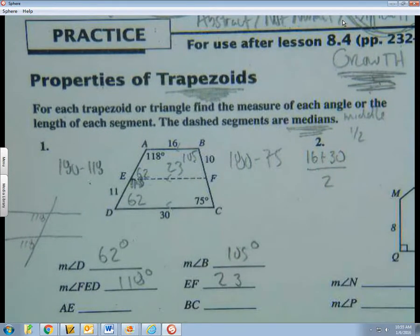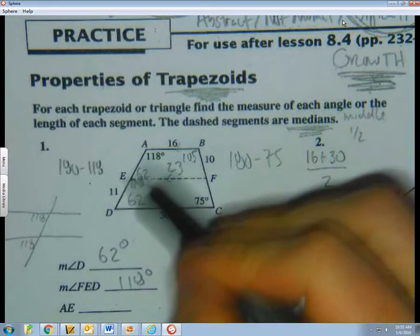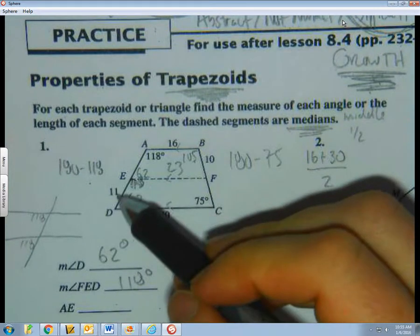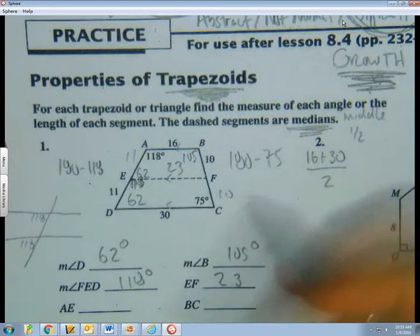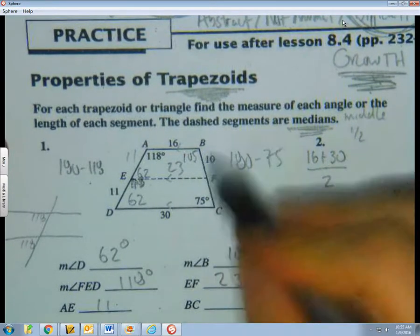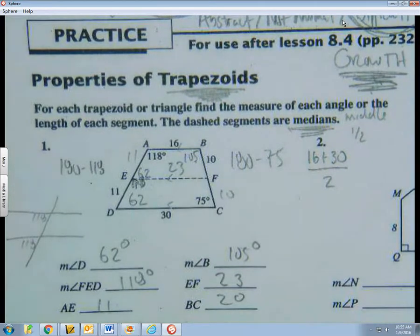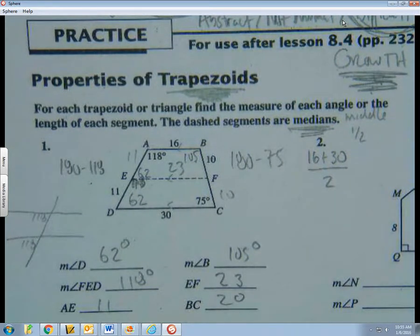Now it's just a matter of filling things in. D is 62. B is 105. FED is 118, these are degrees. AE is right here. If this is a median, well then this is 11, this is 11, this is 10, this is 10. So AE is 11, and then BC is the whole thing, 20. I'll give you a second to get that down. We can ask the person who's driving the bus to pause it. And as always with this, notes grade for these notes. So I'll come around and do a spot check and make sure you're getting this stuff.